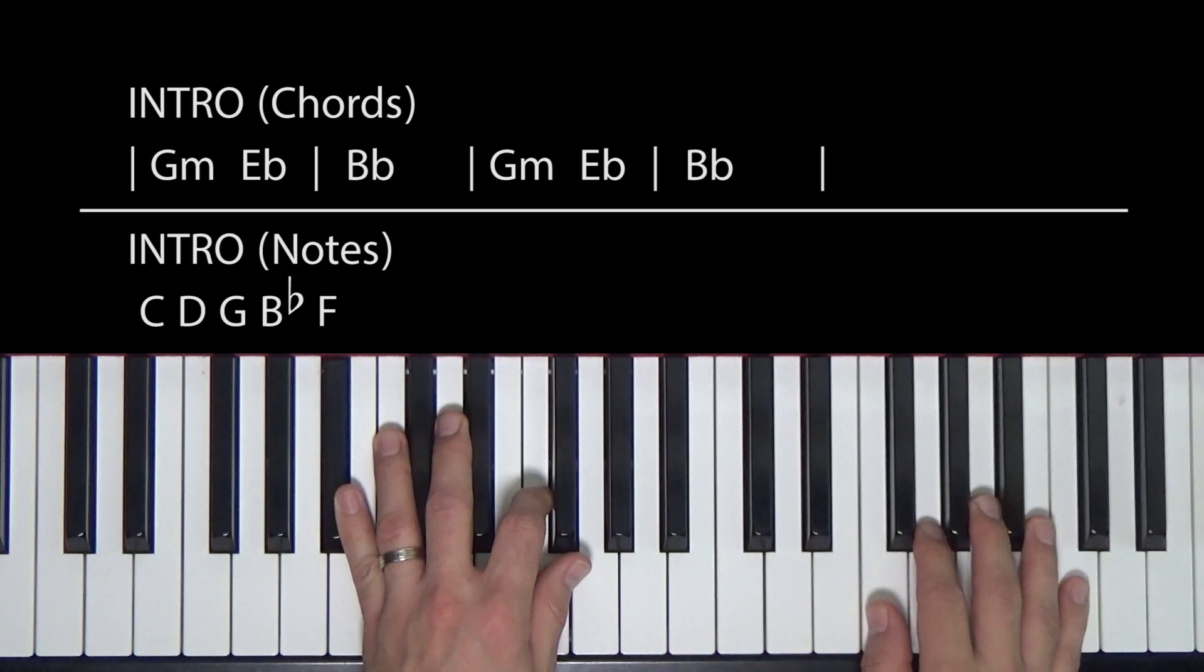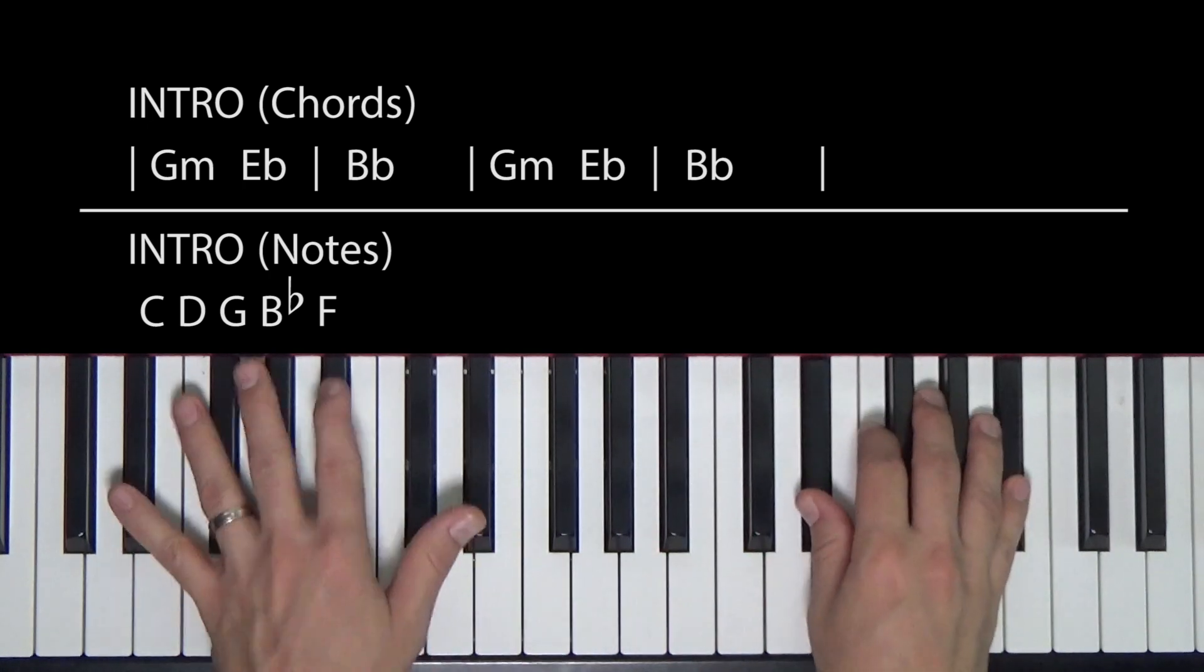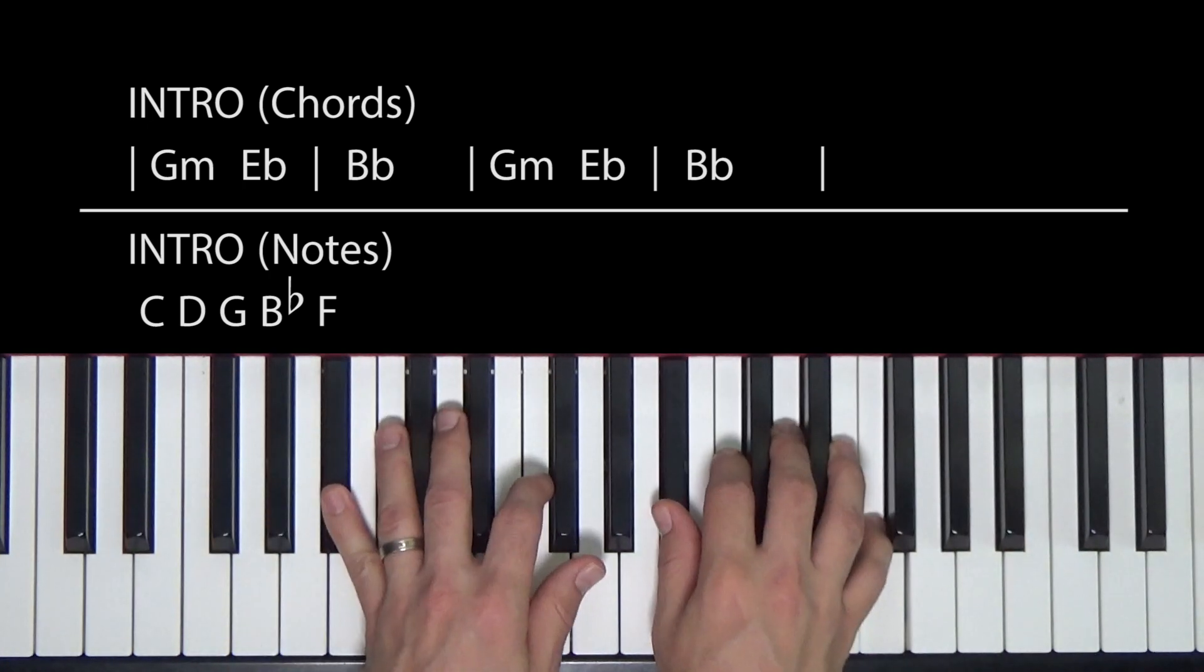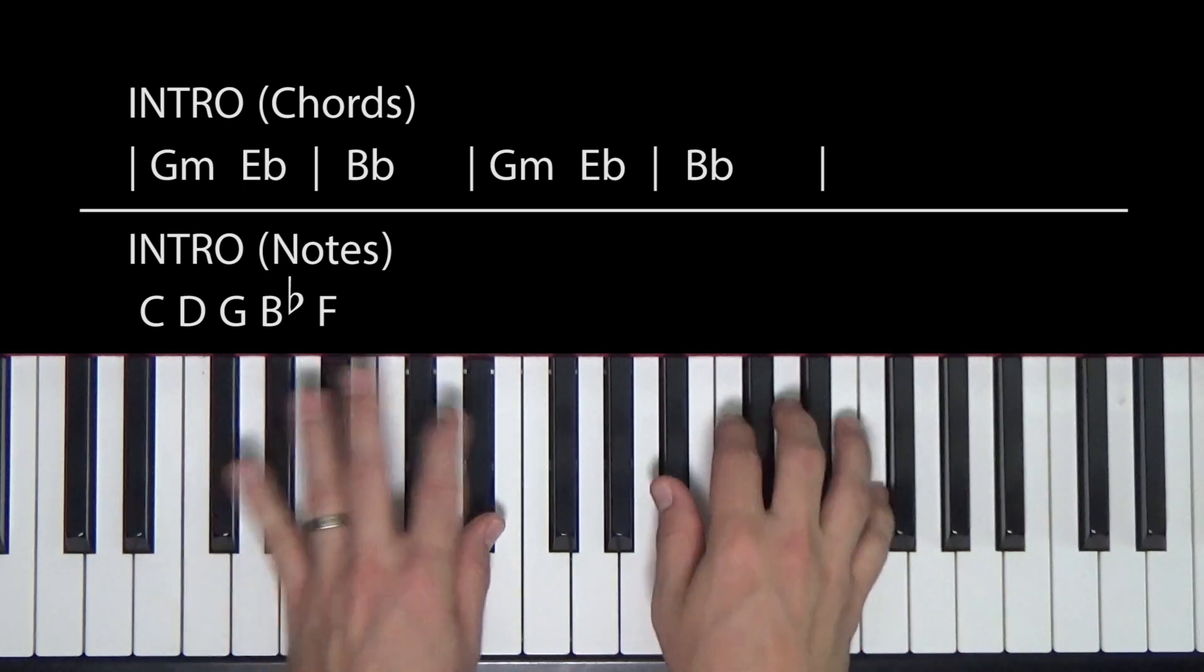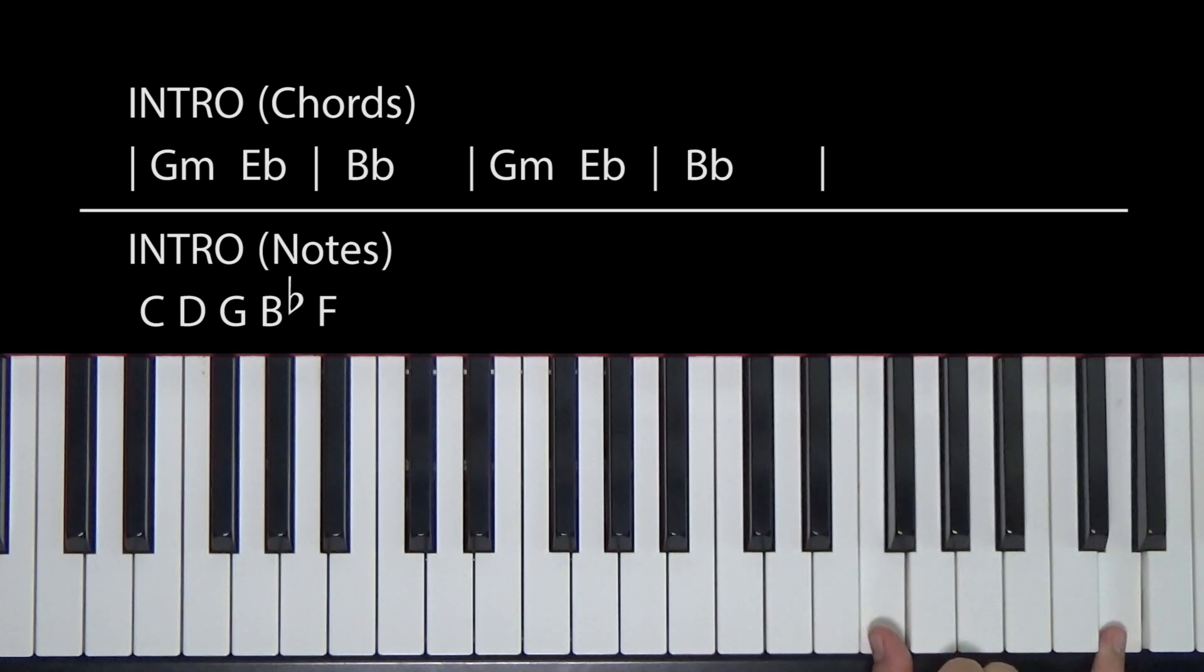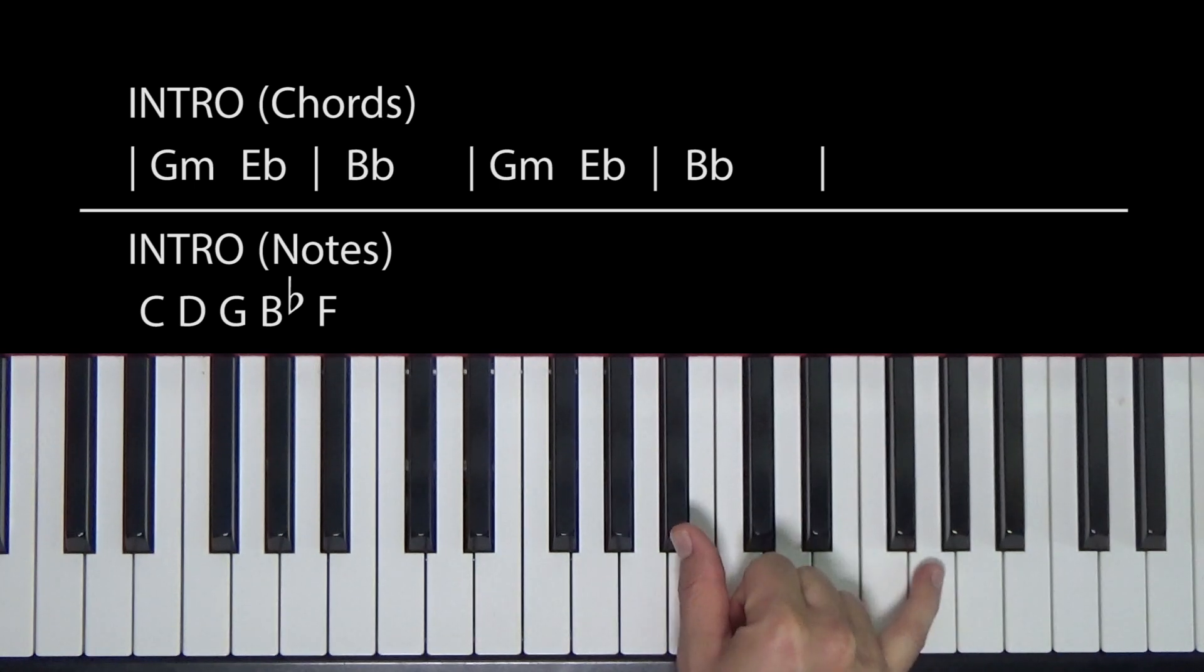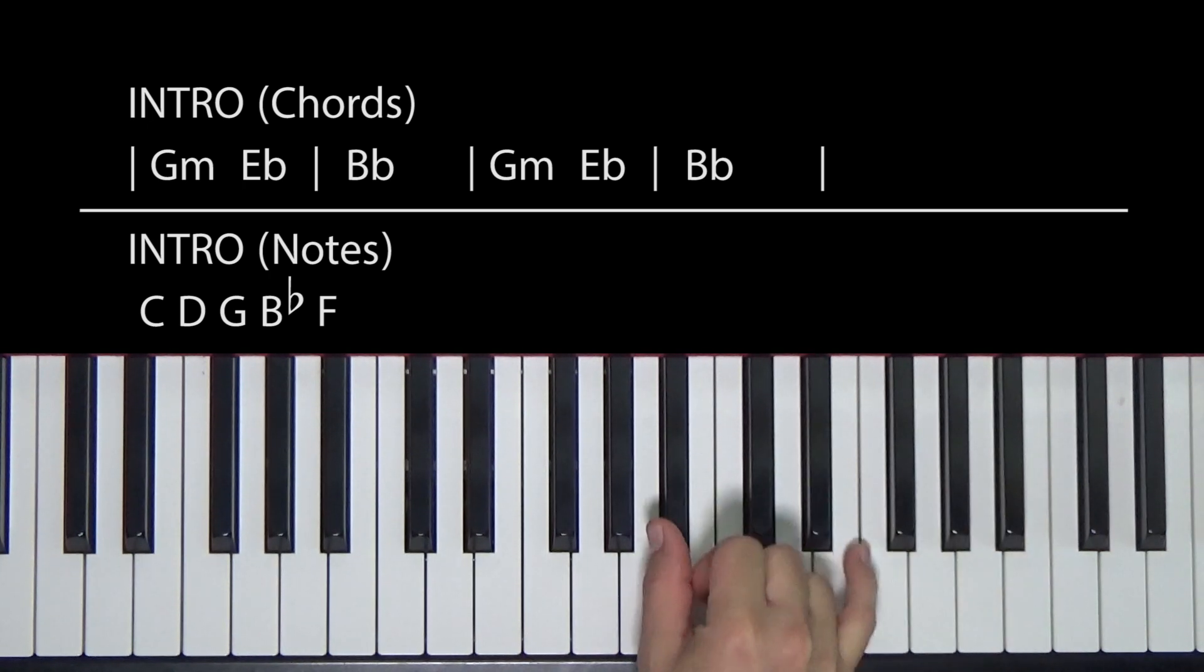All right. Now, if you want to add some more stuff to it, make it sound kind of fuller, I would do something like this. All right. So all I'm doing is holding down the F here. And then we'll jump down here. B flat and a G. Then B flat and E flat. And then we'll end on this F. And I might even add like a full chord in there. B flat, C, D, F.